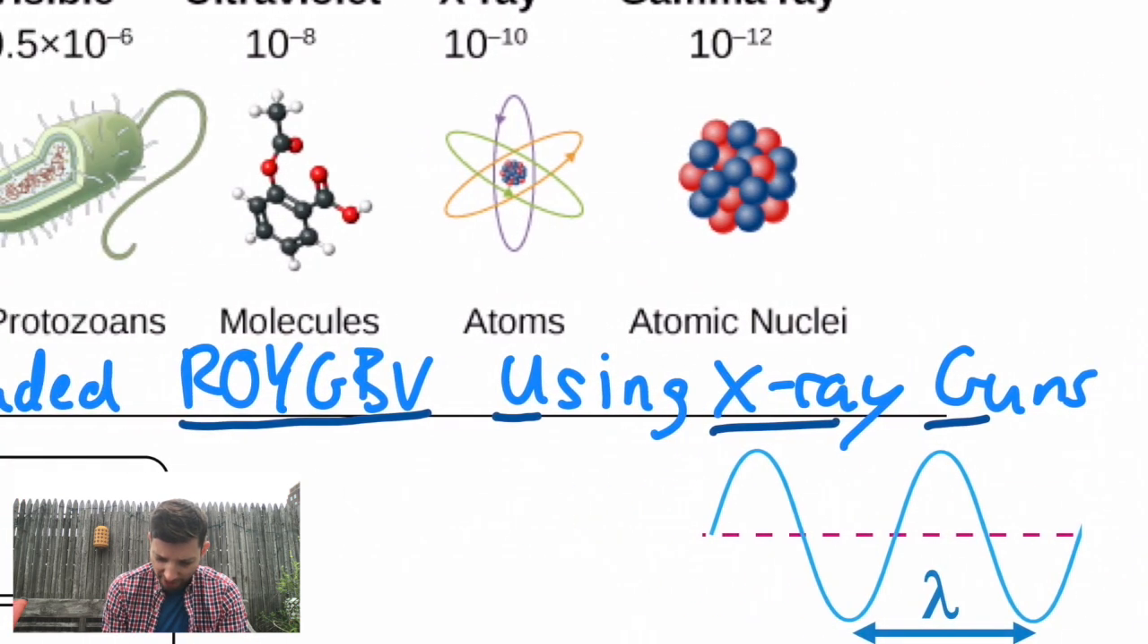...radio, micro, infrared, right into the visible range, red, orange, yellow, green, blue, violet, and then into the higher energy range of ultraviolet, x-rays, and gamma rays. And that's what that actually means. The radio waves are on the low energy end of that list, whereas things like x-rays and gamma rays are on the high energy range.